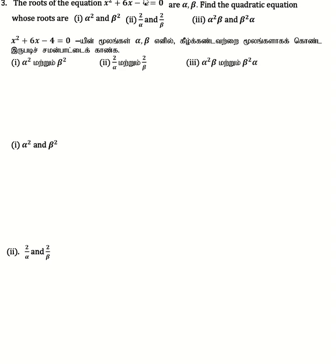This is problem 3.14 in the third sum. The roots of the equation x² + 6x - 4 = 0 are alpha and beta. Find the quadratic equation whose roots are: first, alpha² + beta² and second, 2/alpha and 2/beta, and third, alpha²·beta and beta²·alpha.